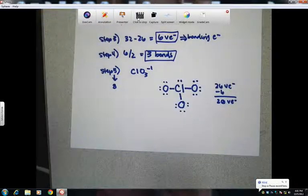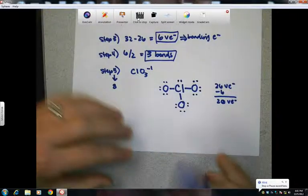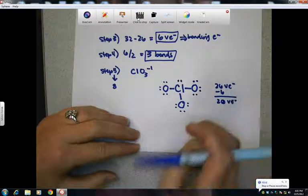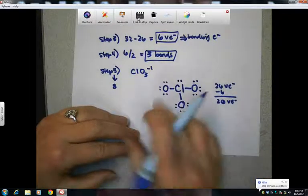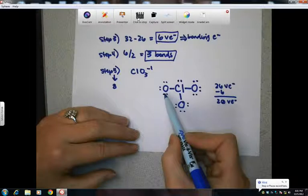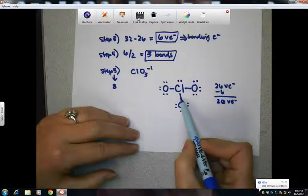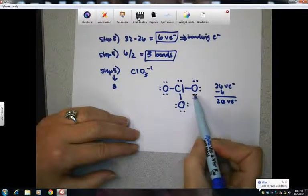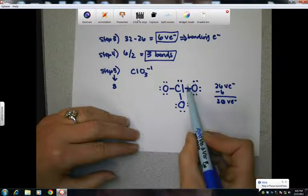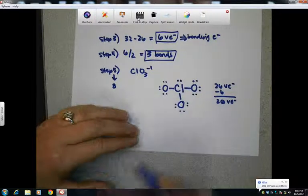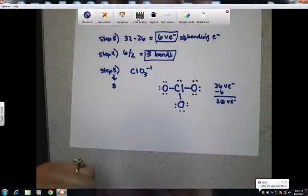Now, make sure that you only used 26 electrons. So I'm going to double check. I'm going to count. Two, four, six, eight, 10, 12, 14, 16, 18, 20, 22, 24, 26. So I only used what I had, our 26 electrons.